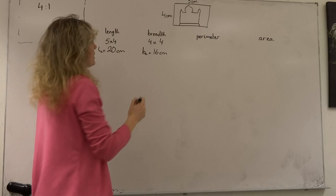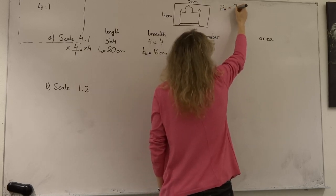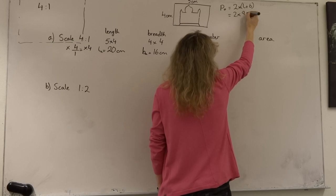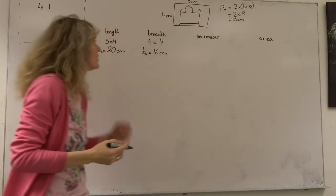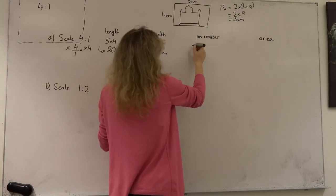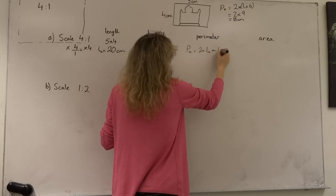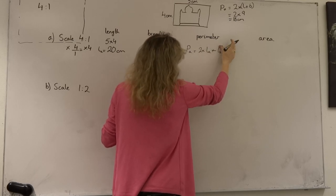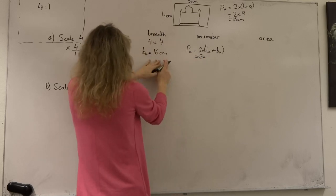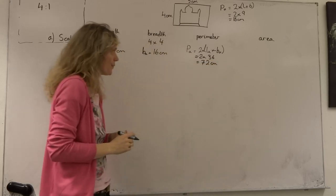What would happen to the perimeter? The perimeter of the original photograph would be 2 times the length plus the breadth, which is 2 times (4 plus 5), giving 18 centimetres. The perimeter of our enlarged sketch would be 2 times (16 plus 20), which is 2 times 36, giving 72 centimetres.